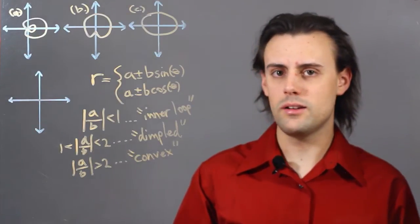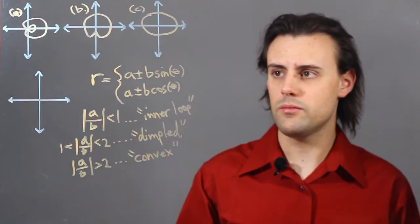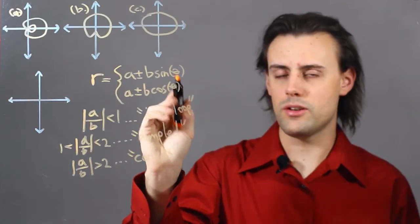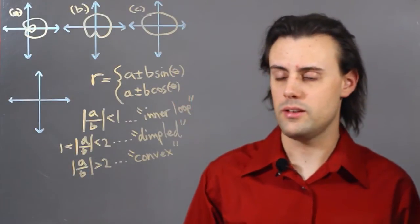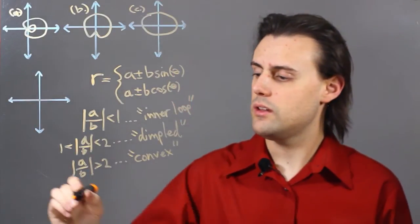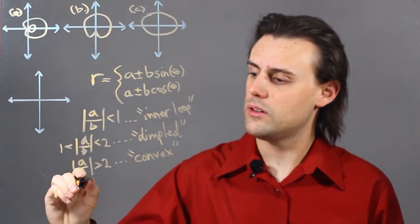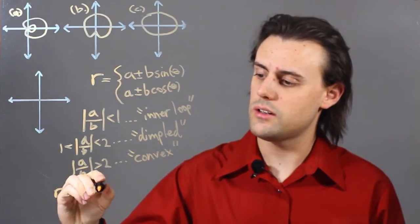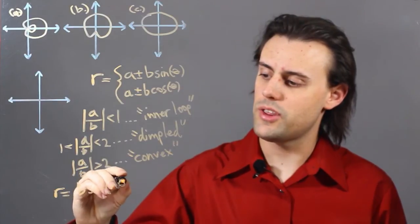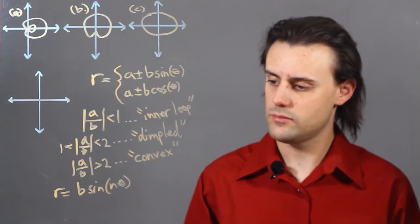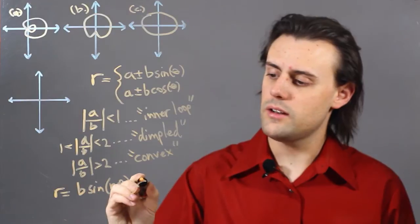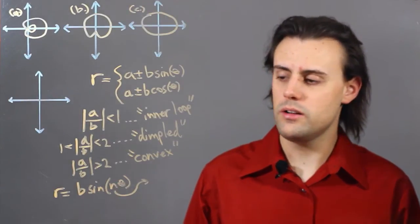Finally, we can consider the case of a Limasson where the frequency term in the trigonometric function is not equal to 1. So if I have r equals b sine of n times theta, for example, n can be either even or odd. It's an integer.